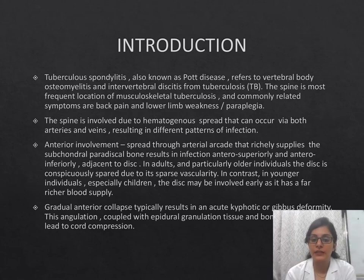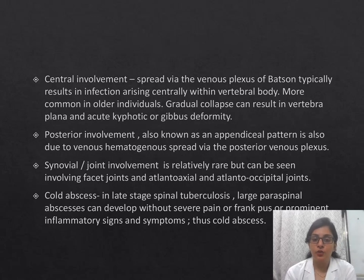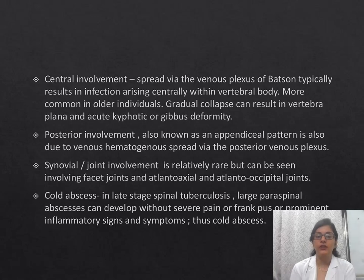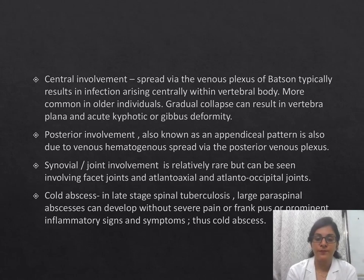Gradual anterior collapse typically results in acute kyphotic and gibbus deformity, and this angulation coupled with the epidural granulation tissue leads to cord compression. Central involvement spreads via the venous plexus of Batson, typically resulting in infection rising centrally within the vertebral body. More common in older individuals, gradual collapse can result in vertebral plana and acute kyphotic and gibbus deformity, which also leads to cord compression.